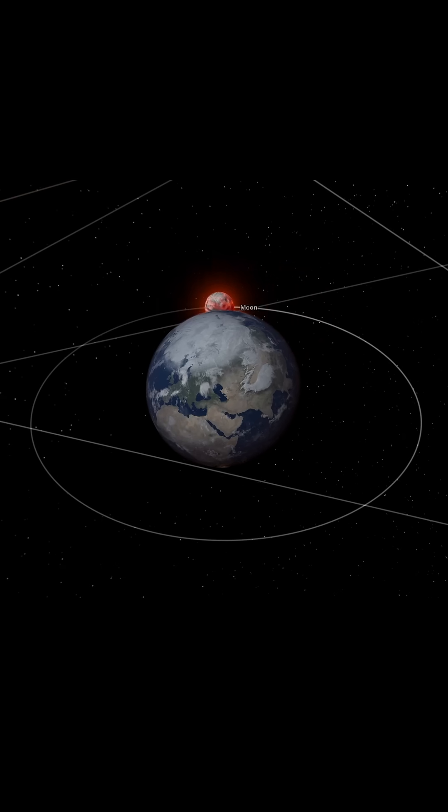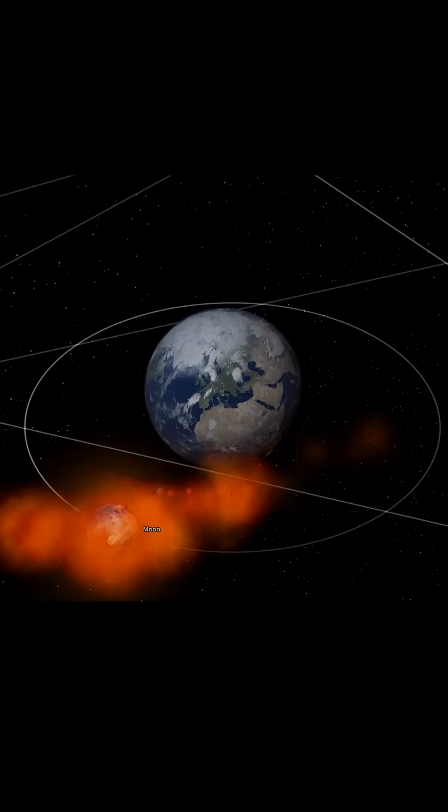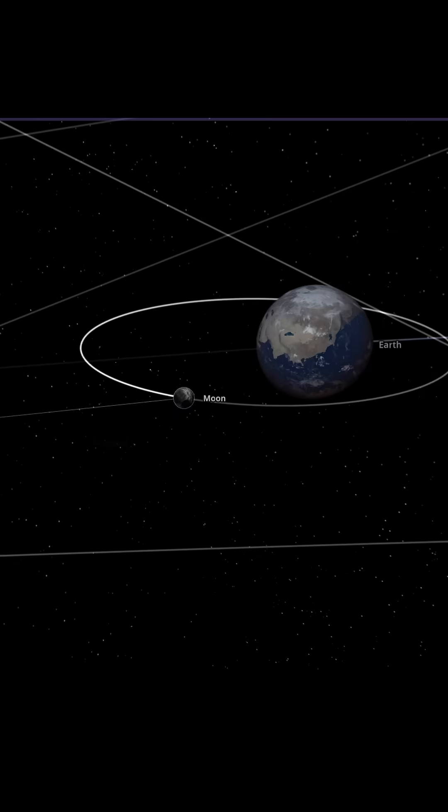This fragmentation would continue until the Moon either finds a stable orbit or is ejected from Earth's gravitational influence. As the Moon's surface breaks apart, its core becomes significantly smaller.